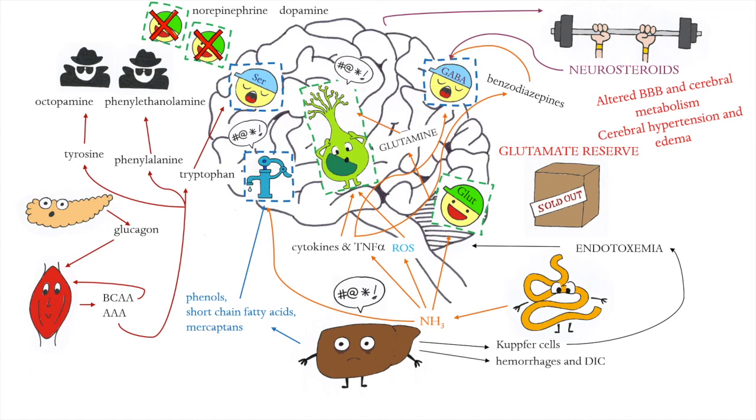The liver also produces coagulation factors, so its disease can lead to hemorrhages and disseminated intravascular coagulation.